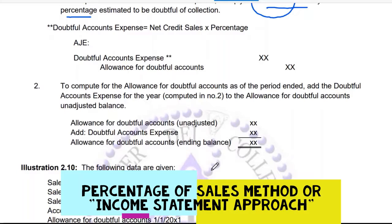The journal entry is: debit 'doubtful accounts expense' and credit 'allowance for doubtful accounts,' or 'bad debts expense' credit 'allowance for bad debts,' or 'uncollectible accounts expense' credit 'allowance for uncollectible accounts' — whichever is used in your company or specified in the problem. To compute the allowance for doubtful accounts, add the doubtful accounts expense for the year.